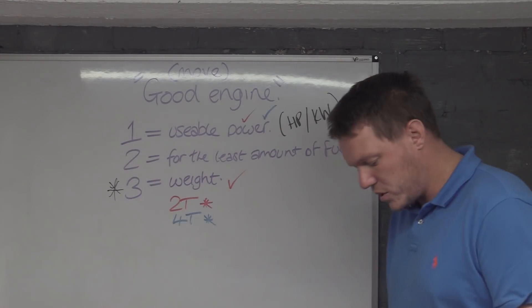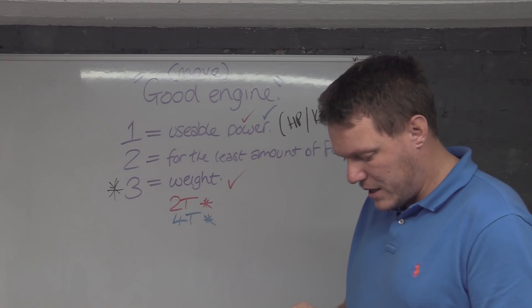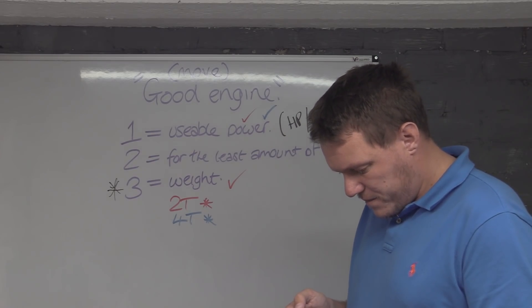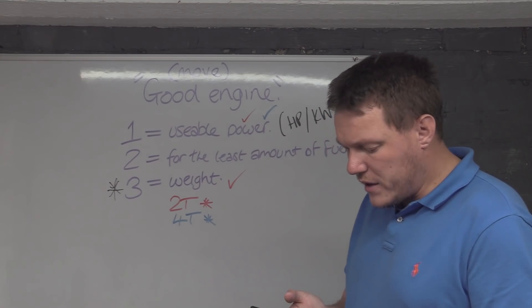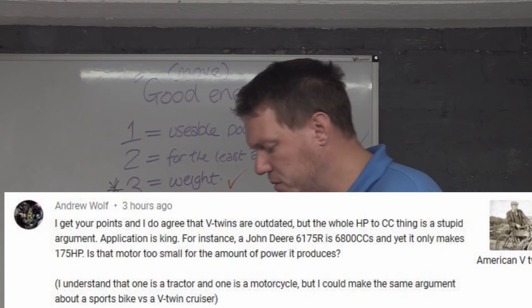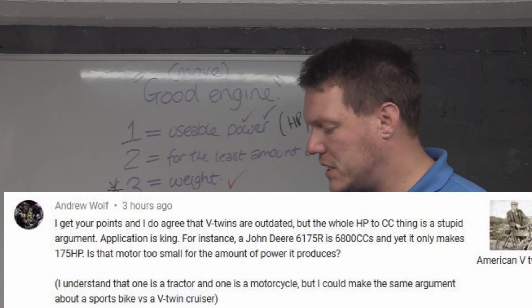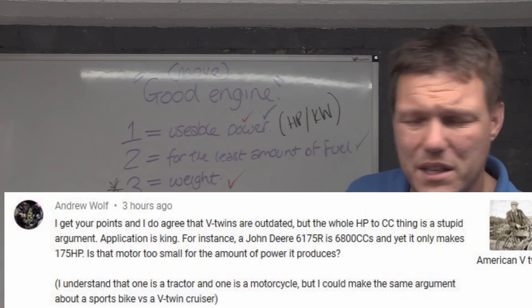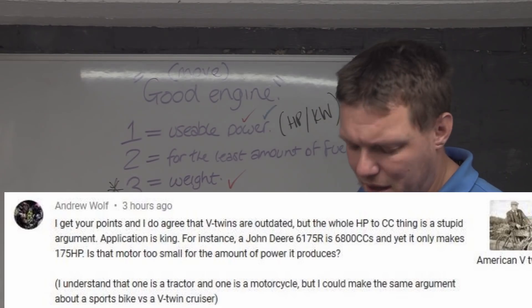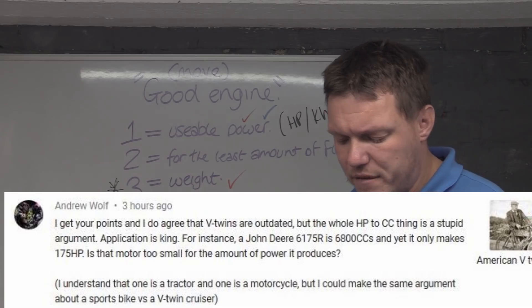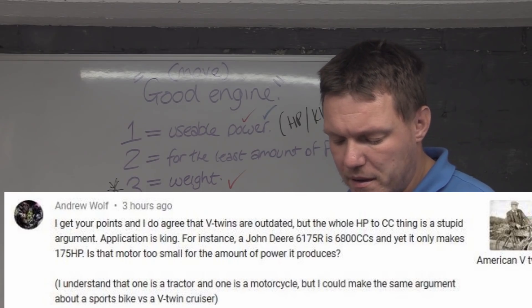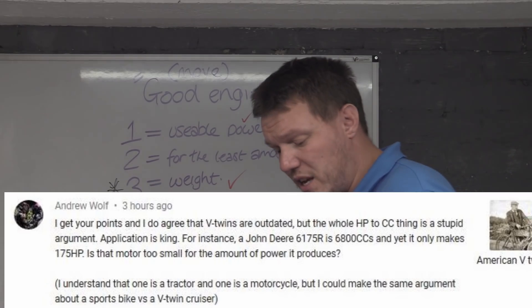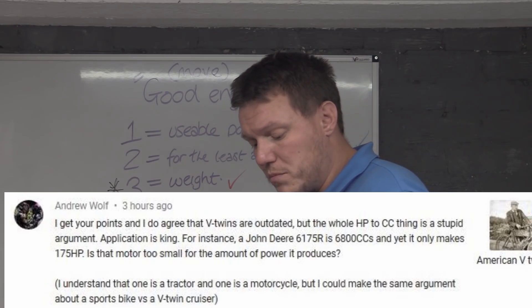I can't believe I haven't done this video until now. Oh yeah, we're going to get into one of the other questions. I get your point and I do agree that the V-twins are outdated, but the whole horsepower to CC thing is a stupid argument. Well, CC is related to weight. The bigger your cylinders, the bigger everything else has to be to accommodate that. Application is king. For instance, a John Deere is 6.8 liters but yet only makes 175 horsepower. Is that motor too small for the amount of power it produces? Well no.